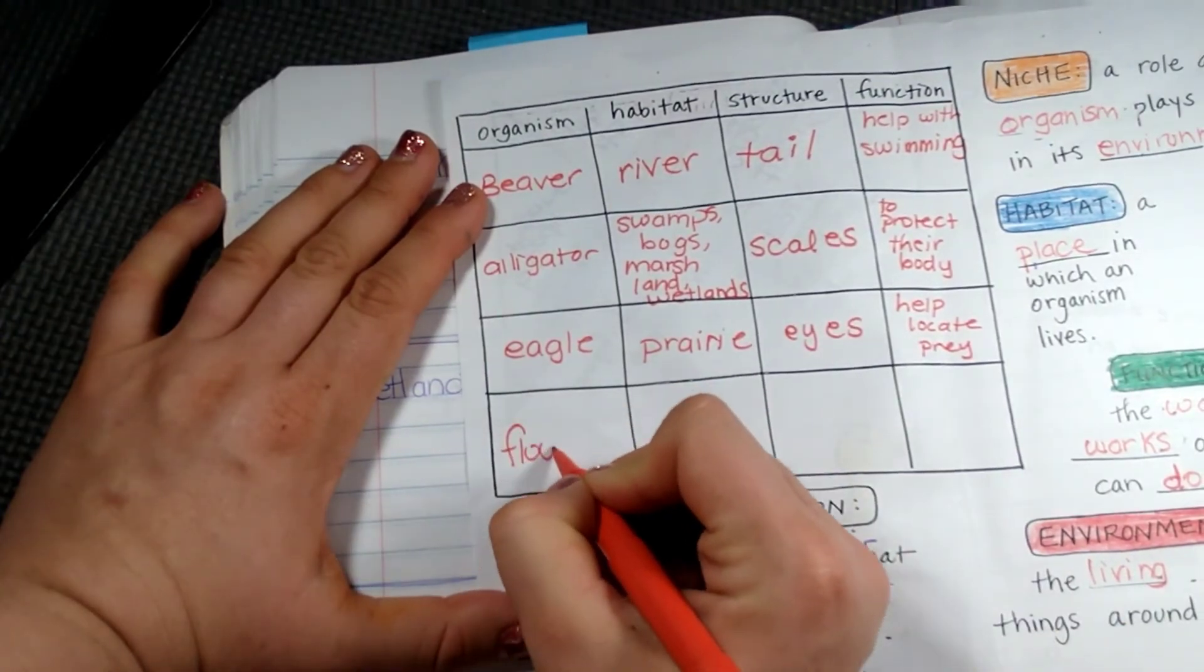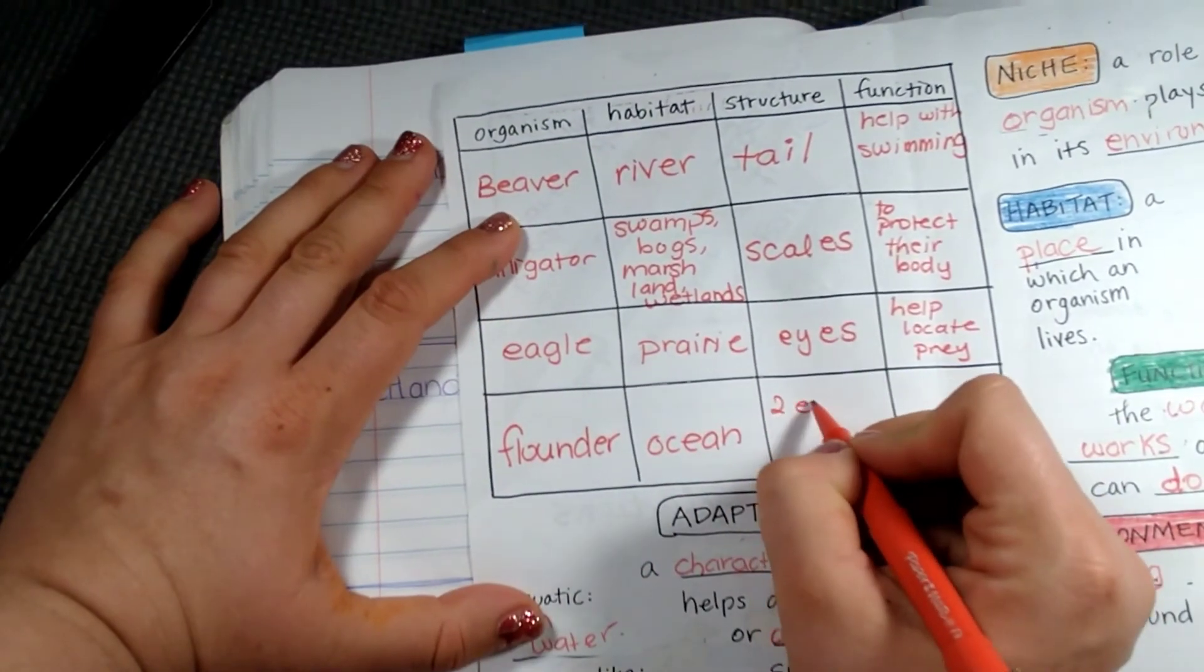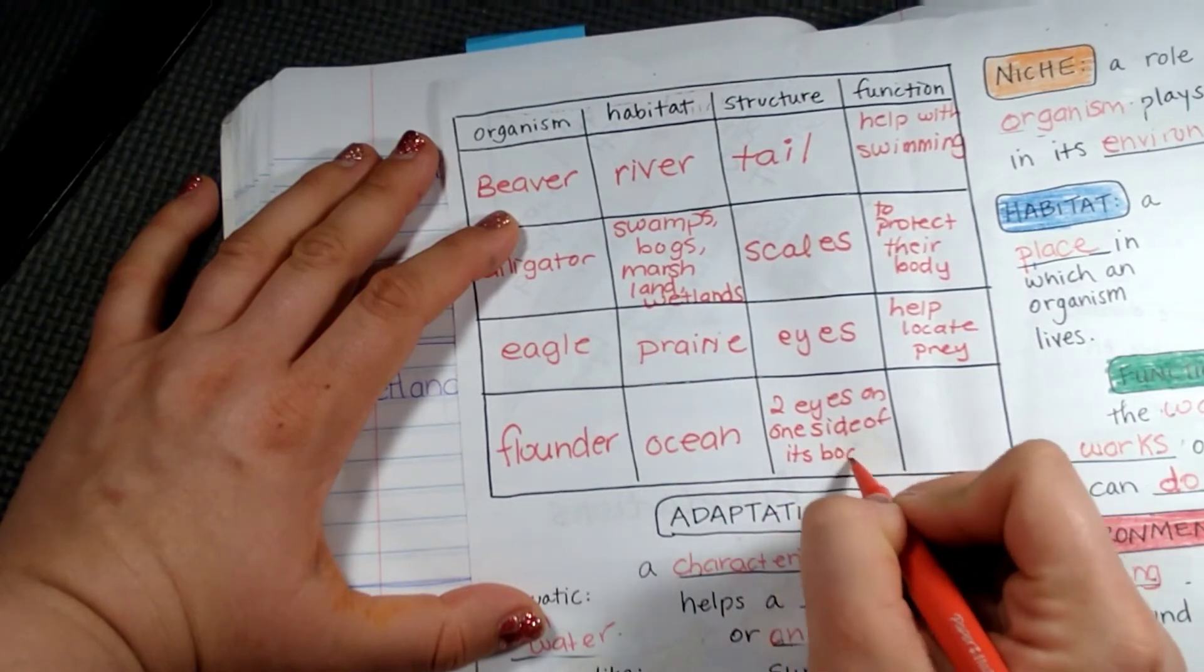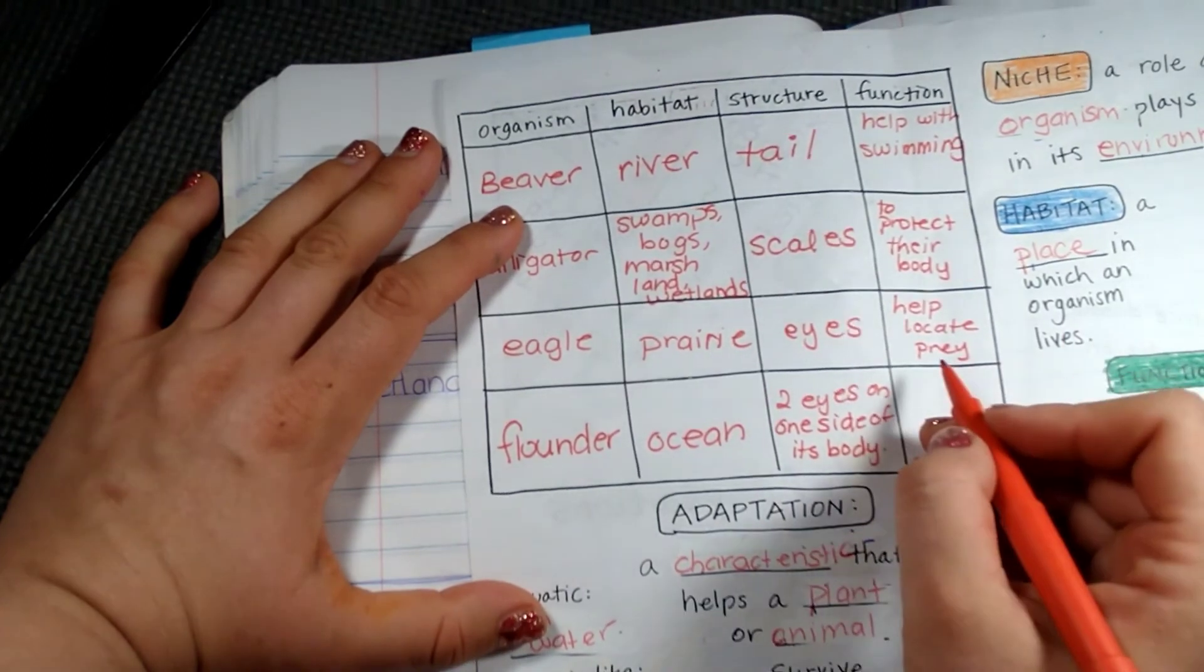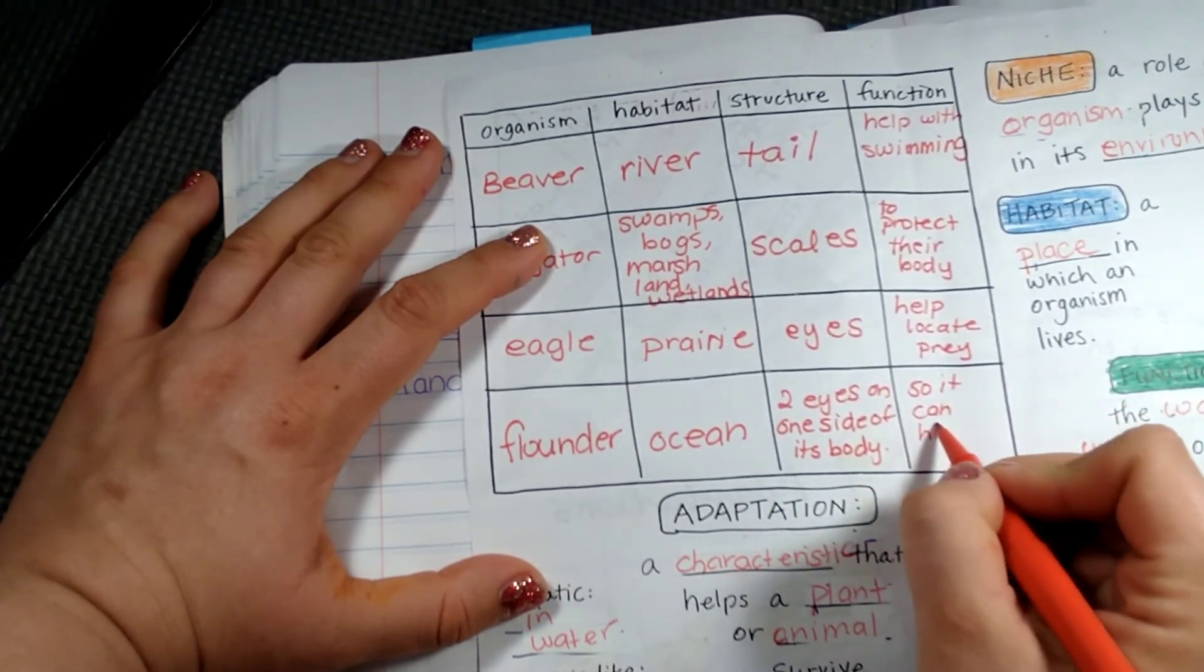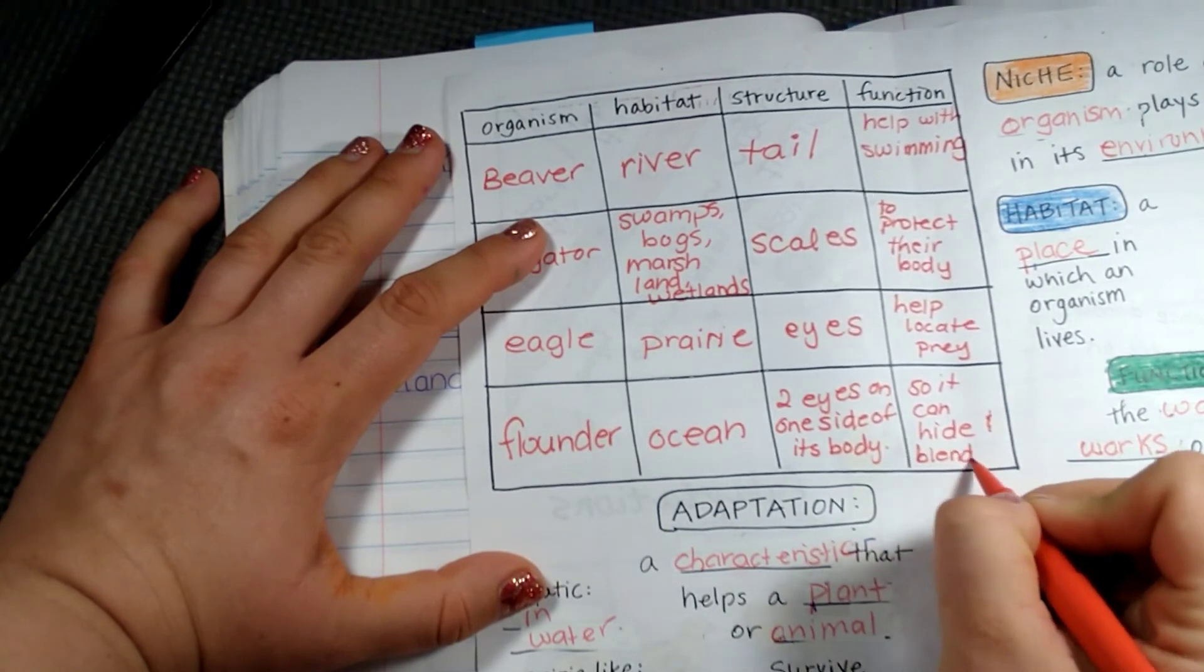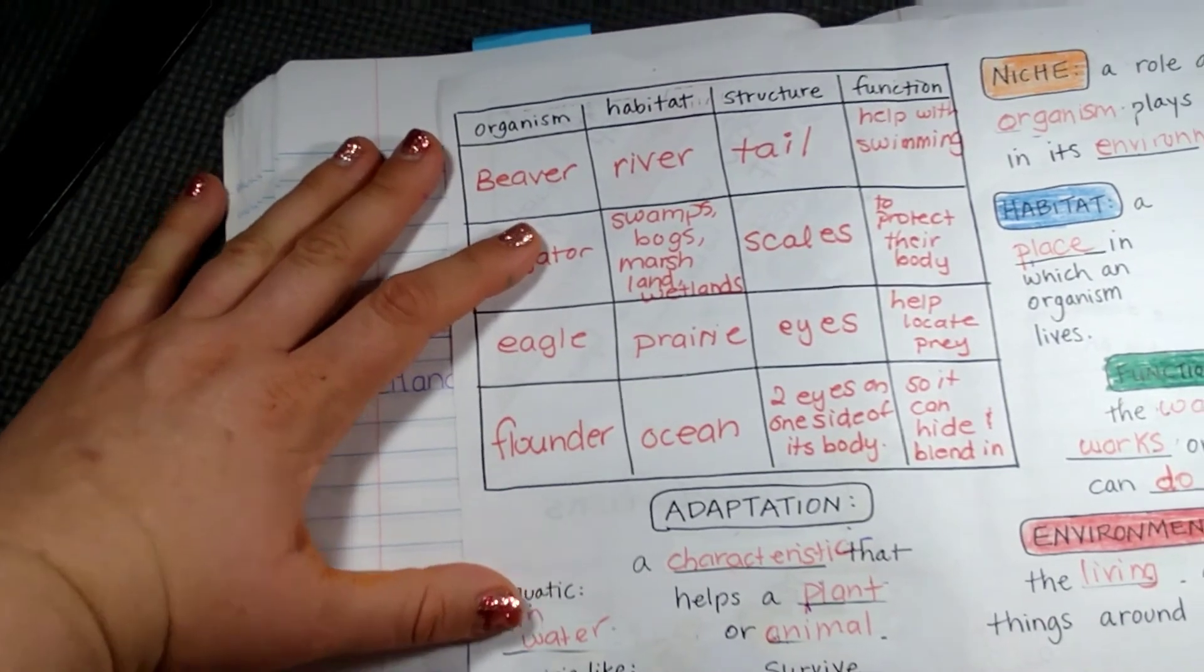And then the last one is a flounder, which is a type of fish. So they live in the ocean. They have two eyes on one side of its body. Now what is the purpose of that? So it can hide and blend in. That way it could see. So those are our adaptation notes.